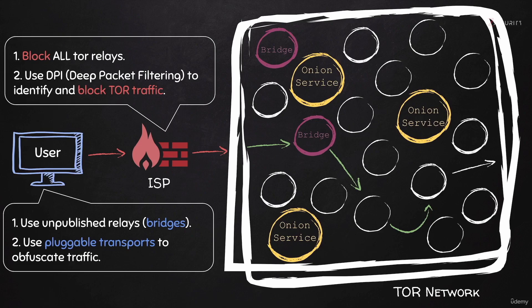In the previous section, I showed you how to do this if you're using the Tor browser. But right now, we're not using the Tor browser anymore — we're using Tails. And as I said, Tails is configured to route all traffic through the Tor network, not only browsing traffic. Therefore, if you want to use a pluggable transport or a bridge, you need to configure the whole distribution to route all traffic through this pluggable transport or through this bridge.